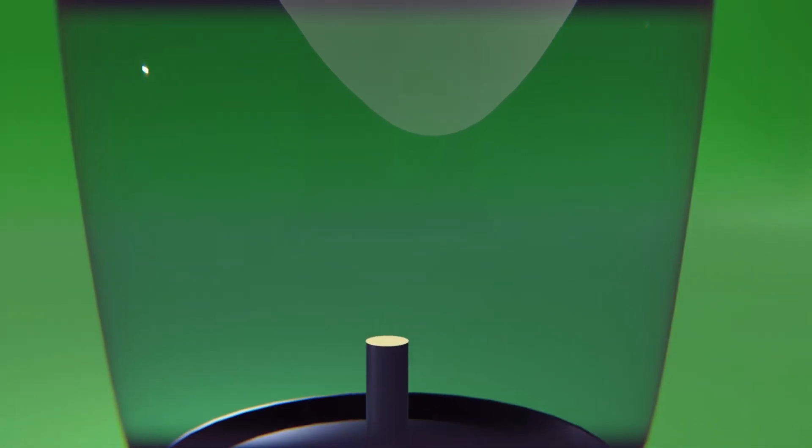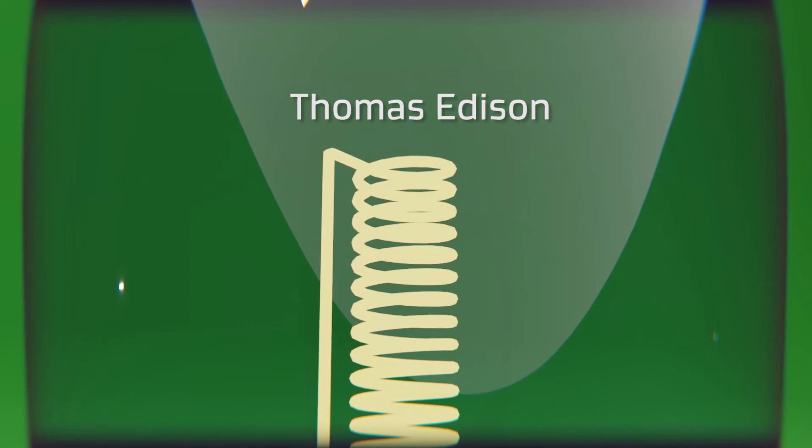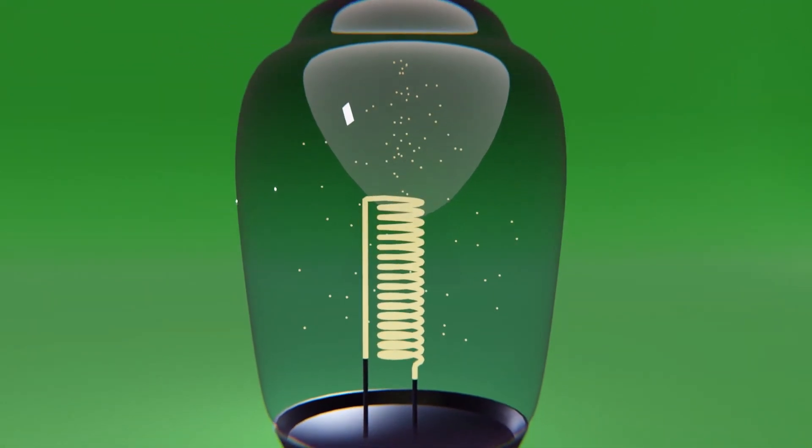Years later in 1880, Thomas Edison, without knowing about the work of Frederick Guthrie, rediscovered this phenomenon while trying to develop the electric bulb. The problem that he wanted to solve was that when he turned on the bulbs, it started to get dark inside.